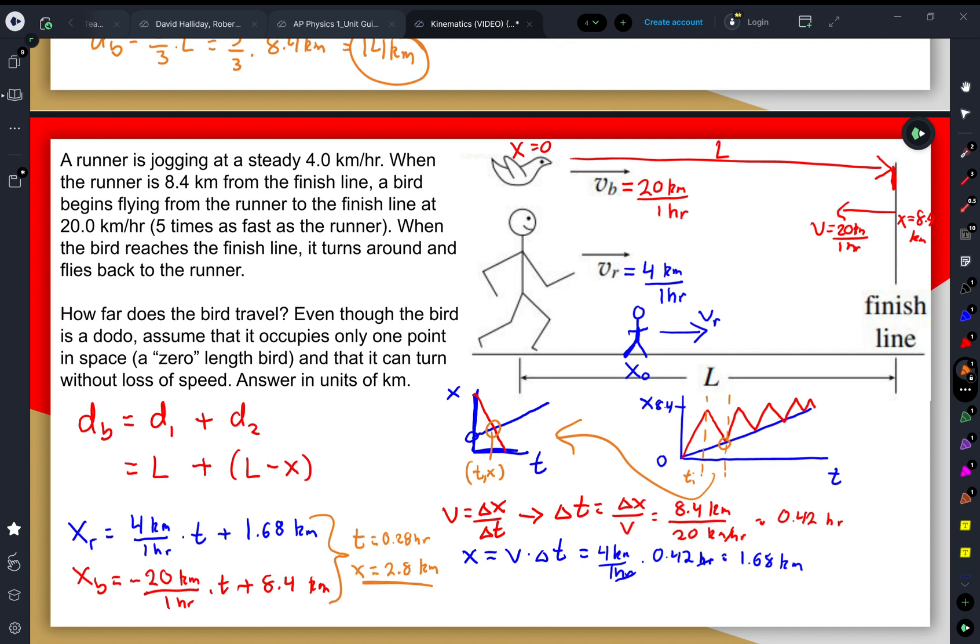If I were to use that up in this equation up above, we could indeed figure out the distance that the bird traveled. It traveled 8.4 kilometers originally plus 8.4 kilometers backwards, but it would have stopped after we got that 2.8 kilometers that the person and the bird had interacted at. So, 8.4 plus 8.4 minus 2.8 would be 14 kilometers, which is how far the bird traveled.